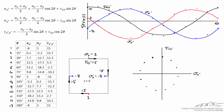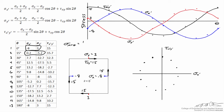One thing to note is that for every value of tau x prime y prime there's a corresponding negative value that's the same. And comparing sigma x prime and sigma y prime, we'll find they are identical values that are just swapped. If we take the average of sigma x prime and sigma y prime for each row, we get the same value — called sigma average, which equals one half times (sigma x plus sigma y), simply the average of the two values.